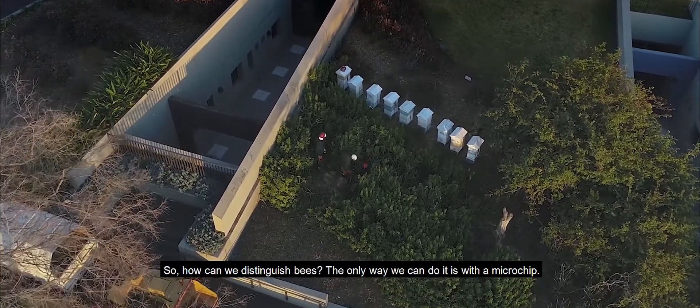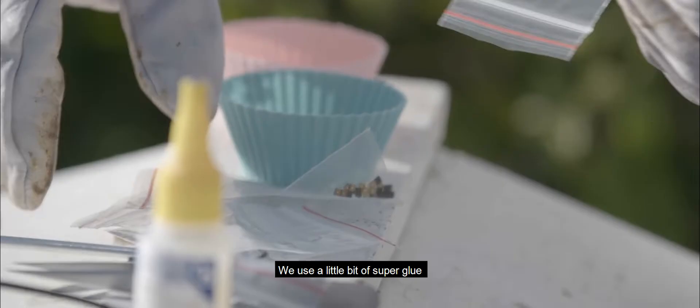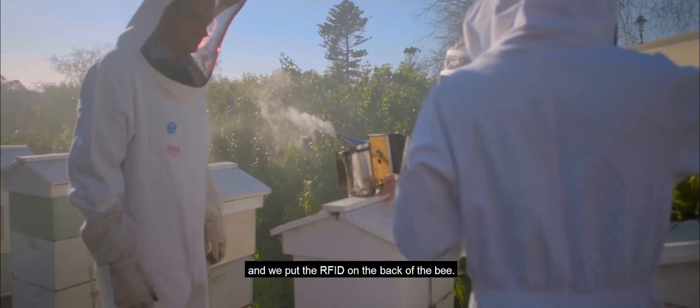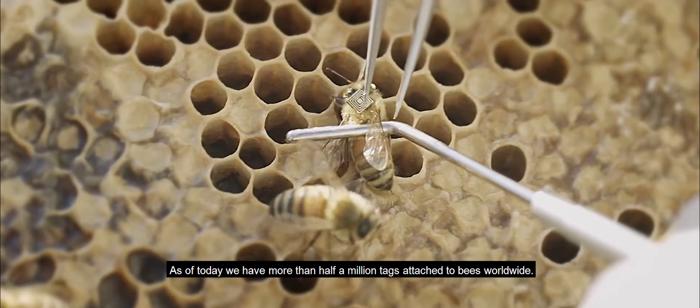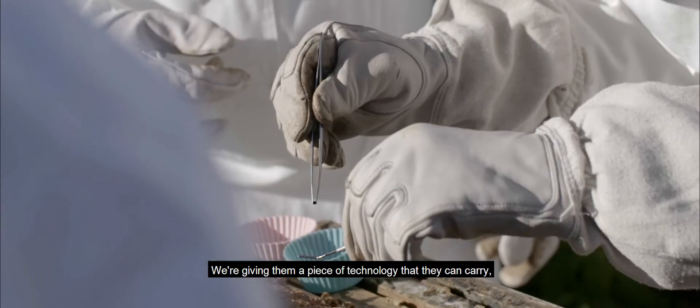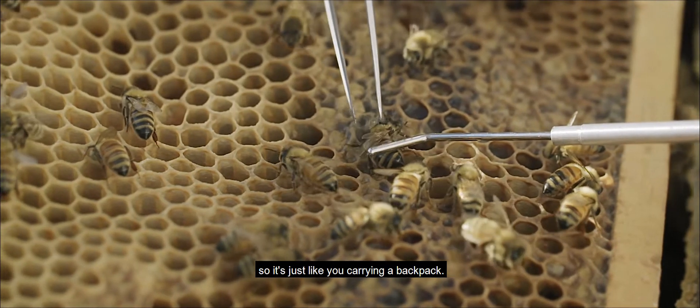So how can we distinguish bees? The only way for us to do that is to use a microchip. We use a little bit of superglue and we put the RFID on the back of the bee. As of today, we have more than half a million tags attached to bees worldwide. We're giving them a piece of technology that they can carry, so it's just like you carrying a backpack.